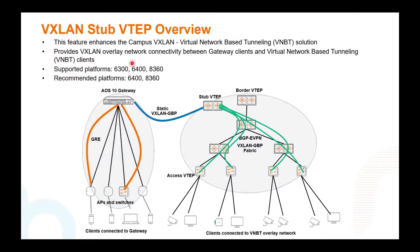Stub VTAP enhances the Campus VXLAN BMPT solution. The Stub VTAP in the middle provides overlay connectivity between the gateway clients on the left — clients connected to the APs to the gateways, or UBT clients on the wired switches to the gateways. In future, the AOS 10 gateway will support Static VXLAN to the Stub VTAP. On the right-hand side is the eVPN network with dynamic tunnels from the access VTAPs to the Stub VTAP. This is supported on 6300, 6400, and A360.